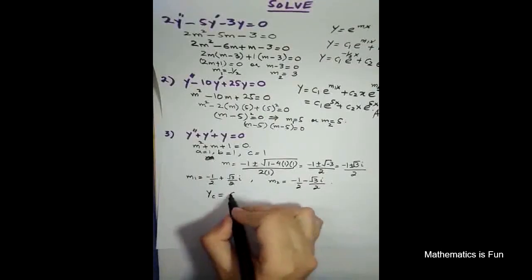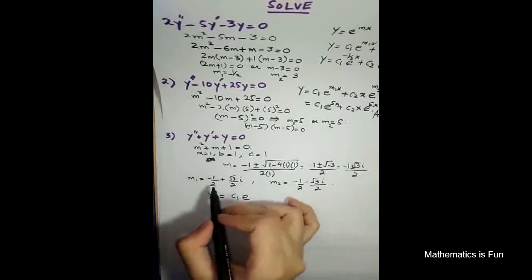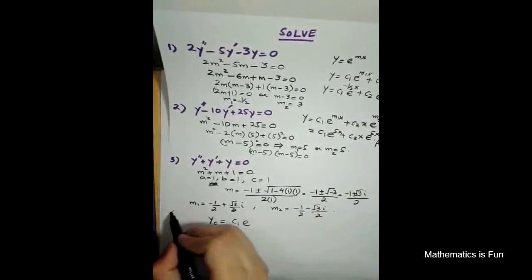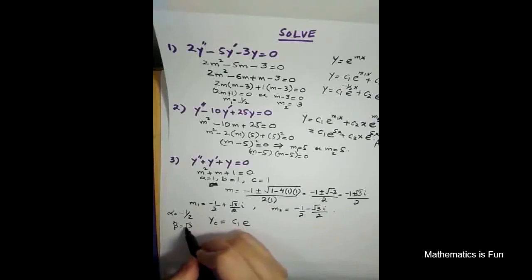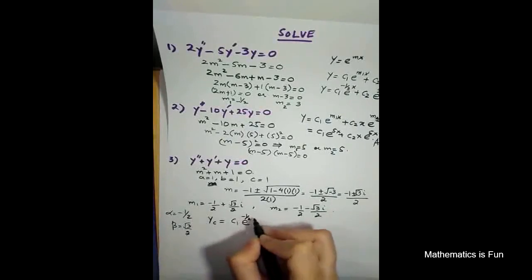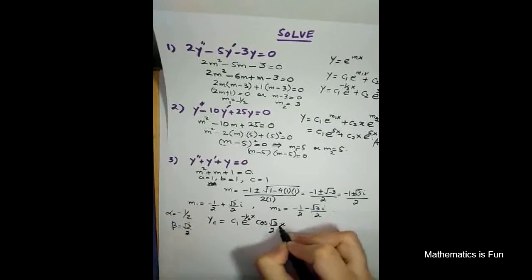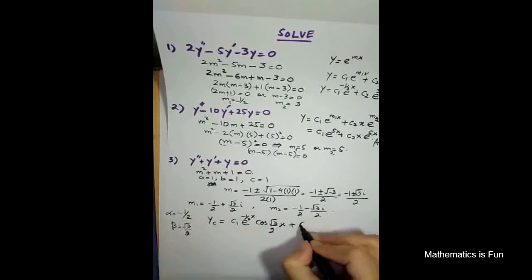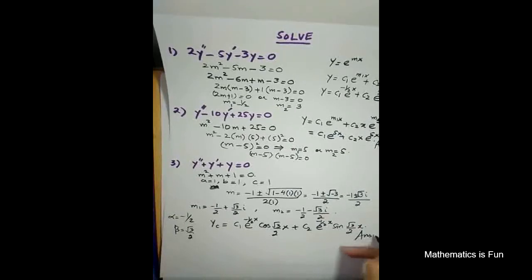So yc equals to c1 e to the power alpha. You can find out alpha here. Alpha here is minus 1 by 2, and beta here is under root 3 by 2, the imaginary part. This is the real part, this is the imaginary part. So e to the power minus 1 by 2 x cos of beta x plus c2 e to the power alpha x sin of under root 3 by 2 x. So that's it.